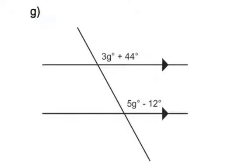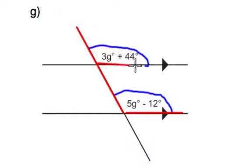I'll start this a little bit differently this time. We're looking at these two angles, the 3g plus 44 and the 5g minus 12. When we look for what pattern we're talking about here, it's an upside down F or rotated around. If you can see the F pattern there, that means these are corresponding angles.